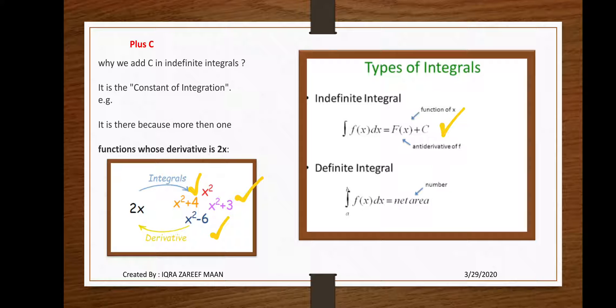Here the value of C is 3, the value of C is 4, C is minus 6, and here the value of C is 0. It means the value of C varies from condition to condition.